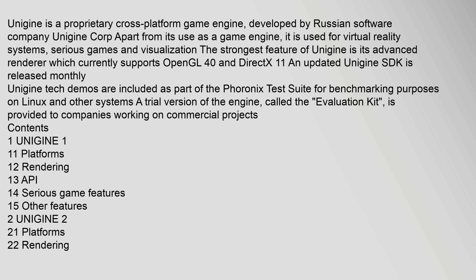Unigine is a proprietary cross-platform game engine, developed by Russian software company Unigine Corp. Apart from its use as a game engine, it is used for virtual reality systems, serious games, and visualization. The strongest feature of Unigine is its advanced renderer, which currently supports OpenGL 4.0 and DirectX 11. An updated Unigine SDK is released monthly.